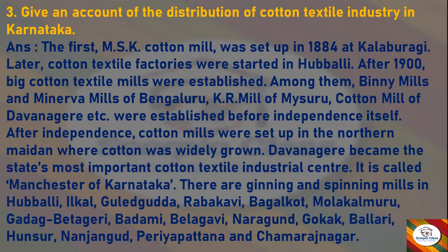Answer: The first MSK cotton mill was set up in 1884 at Kalaburagi. Later, cotton textile factories were started in Hubali. After 1900, big cotton textile mills were established. Among them, Binney Mills and Minerva Mills of Bengaluru, KR Mill of Mysuru, and the cotton mill of Davanagiri were established before independence itself. After independence, cotton mills were set up in the northern Maidan, where cotton was widely grown. Davanagiri became the state's most important cotton textile industry.